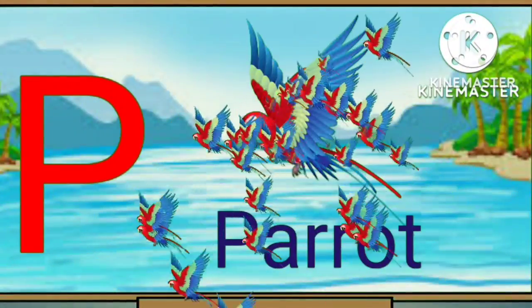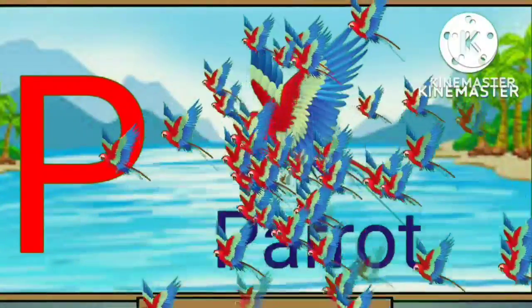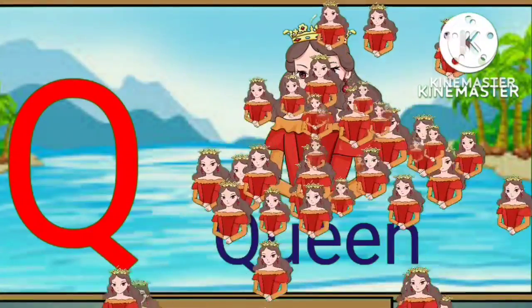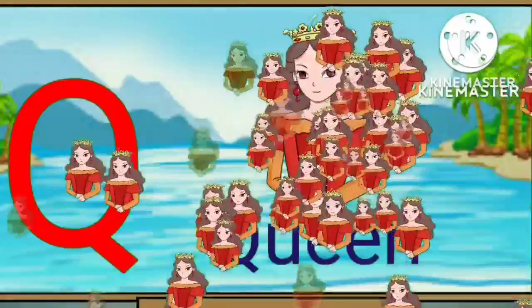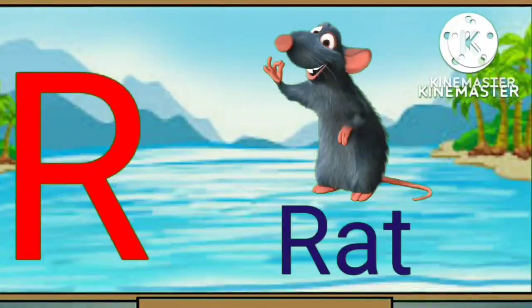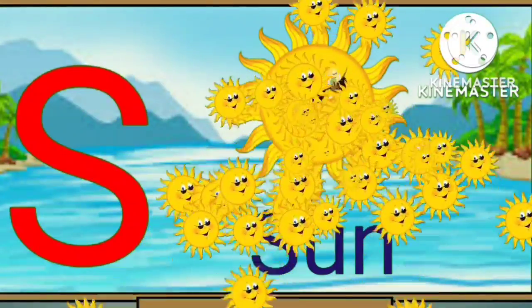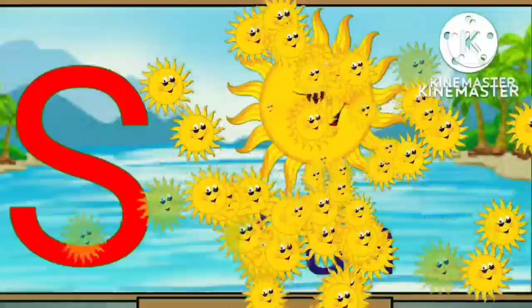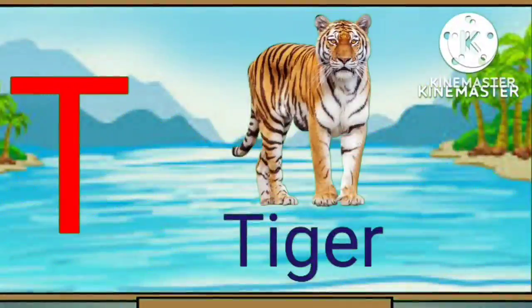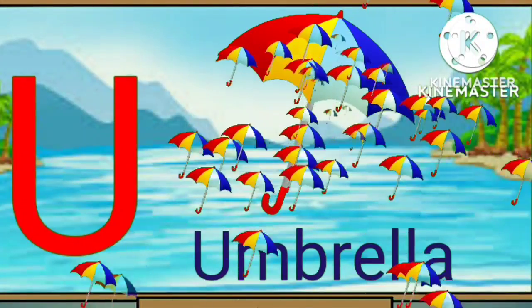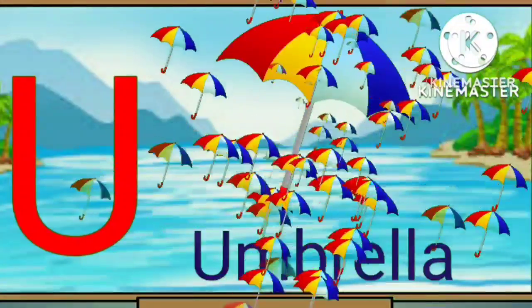P for parrot. Q for queen. R for rat. S for sun. T for tiger. U for umbrella.